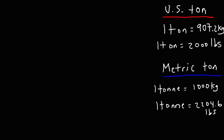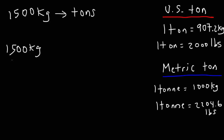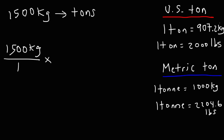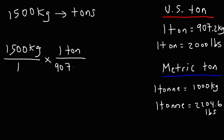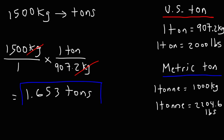Start with the information you were given. Using the same conversion factor — 1 ton is equivalent to 907.2 kilograms — this time we need to divide. So it's 1,500 divided by 907.2, which equals 1.653 tons. That is the answer for this problem.